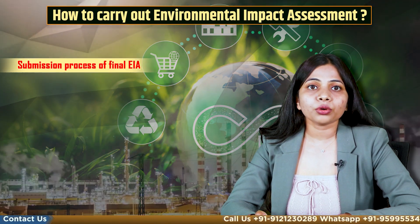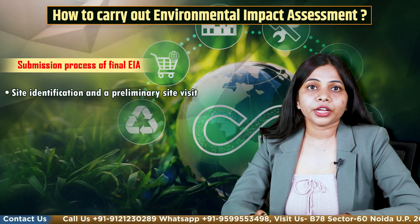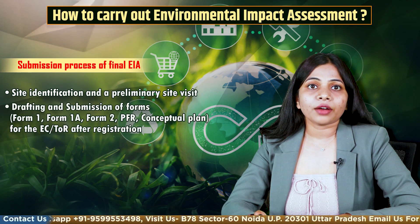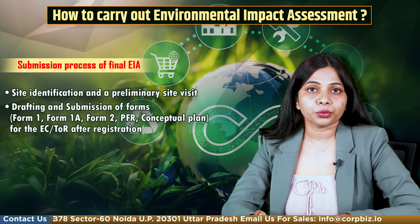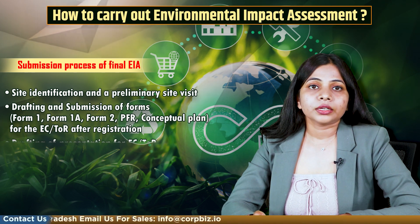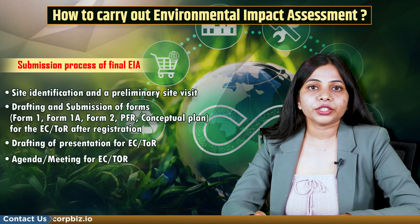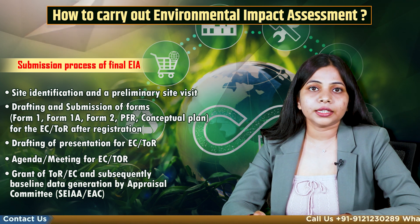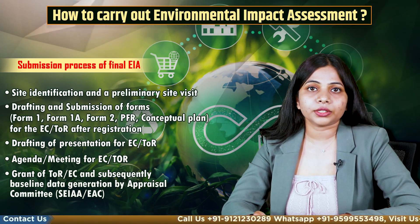Now let's have a look at the submission process of the final EIA. First is site identification and preliminary site visit. Second is drafting and submission of forms: Form 1, Form 1A, Form 2, PFR, conceptual plan for EC, and TOR after registration. Third is drafting of presentation for EC or TOR. Fourth is agenda meeting for EC or TOR. Fifth is grant of TOR, EC, and subsequently baseline data generation by the appraisal committee.